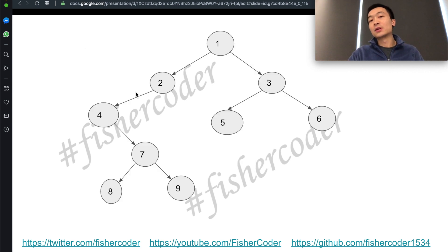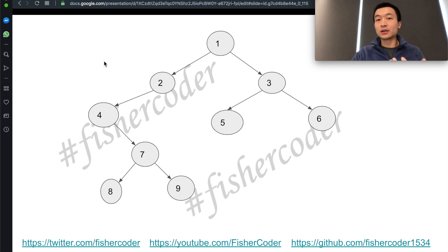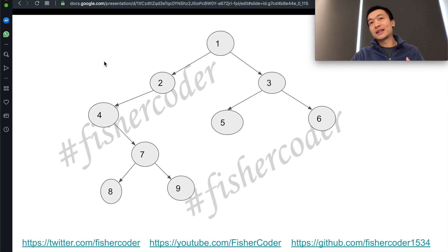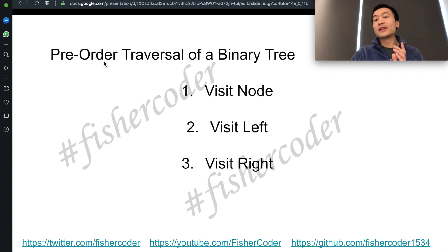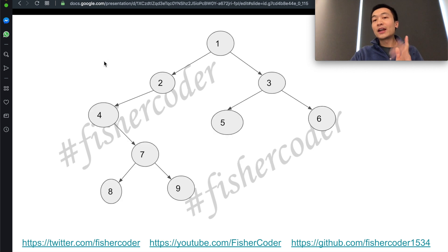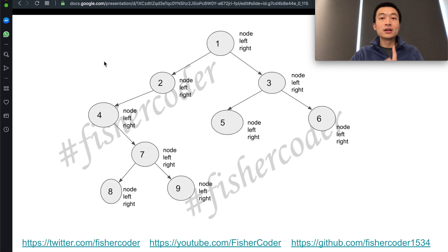Suppose we're given this binary tree: 1, 2, 3, 4, 5, 6, 7, 8, 9. This is exactly the same tree we went through yesterday for the in-order traversal. We'll go through it using the pre-order traversal and see the final output. What we're going to do is follow the order node, left, right — NLR — for every single node.